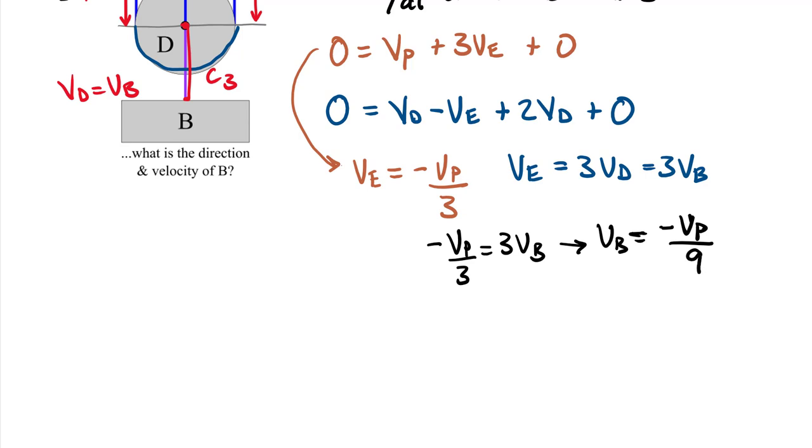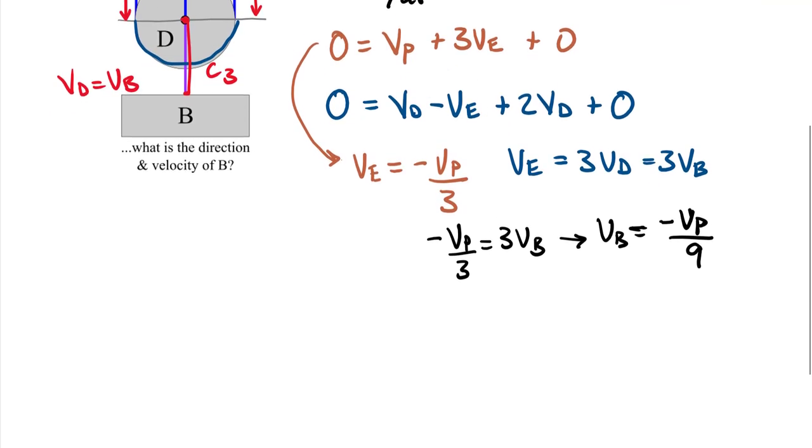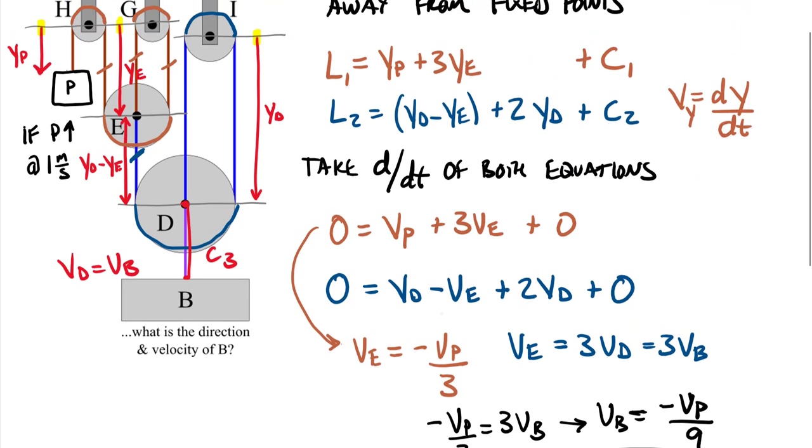We find that VB is equal to negative VP over 9. A 9 to 1 ratio given this pulley system. So if VP is 1, we find that VB is equal to negative 1/9 meters per second. A 9 to 1 ratio between block B and block A.